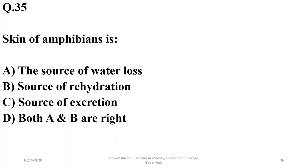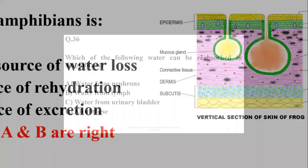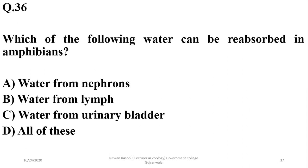The skin of amphibians is a source of rehydration at times, but it is also a cause of water loss. The thin skin may cause loss of water, but when they are in water they may absorb water directly through their skin. Water from nephrons, lymph, or even the urinary bladder can be reabsorbed in amphibians to maintain a normal water level. So the right option is D.